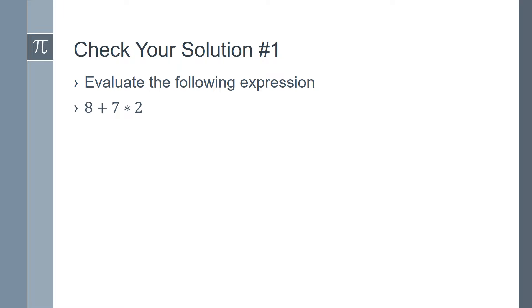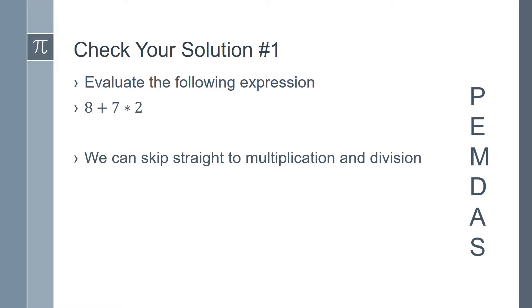Remember that the first thing we should do is write the acronym PEMDAS on the side of our page. There are no parentheses or exponents in this example, so we can move straight to multiplication and division. 7 times 2 is 14, so we have 8 plus 14. Now we are ready for addition and subtraction. 8 plus 14 is 22.